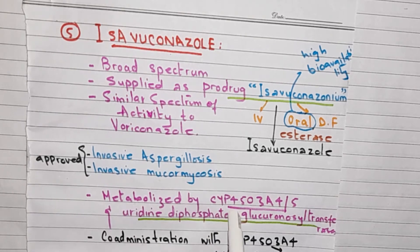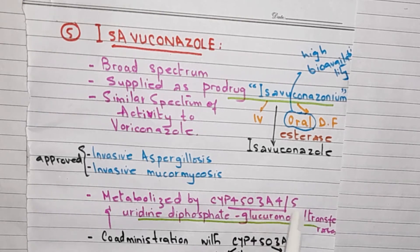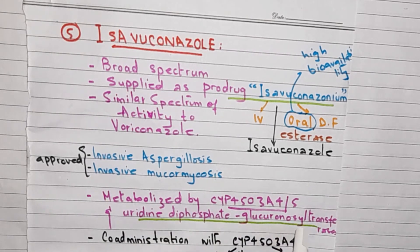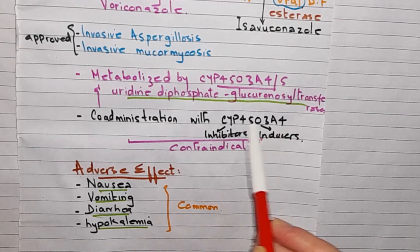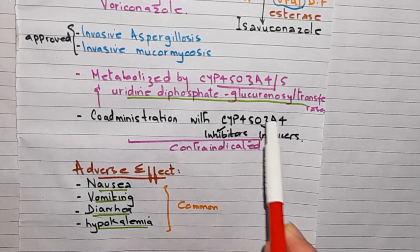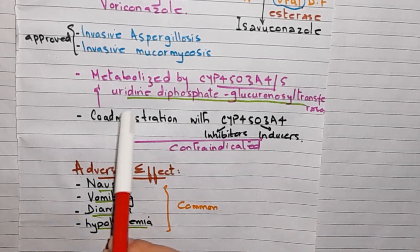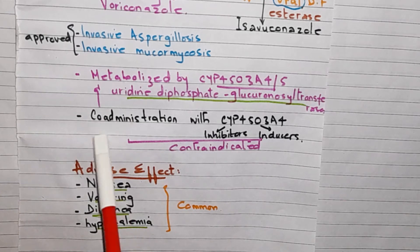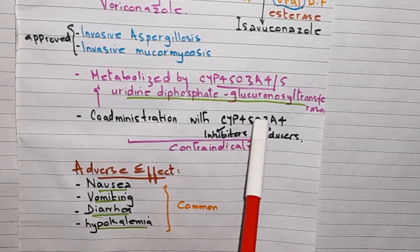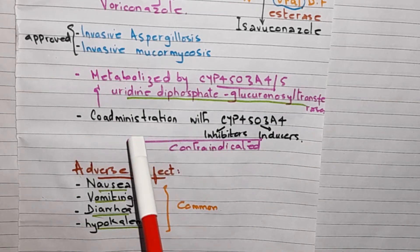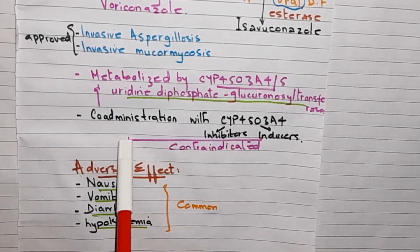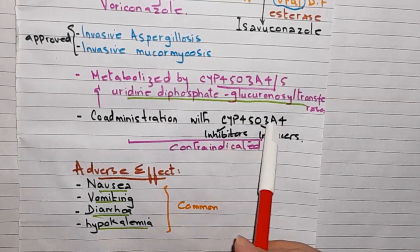Isavuconazole is metabolized by CYP450 3A4 and 3A5, as well as uridine diphosphate glucuronosyl transferases. It is an inhibitor of CYP3A4, so if any agent is metabolized by this enzyme, its level will increase. This creates potential drug interactions and contraindications.